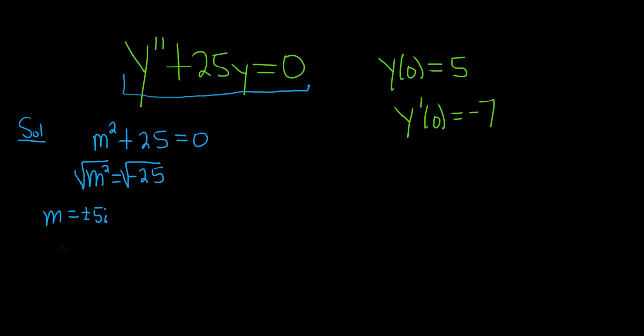Whenever we have complex conjugates, we want to think of them in the form α plus or minus βi. So this is really 0 plus or minus 5i, meaning α is 0 and β equals 5.